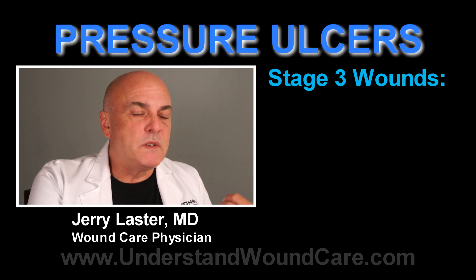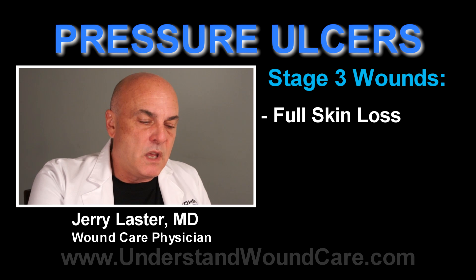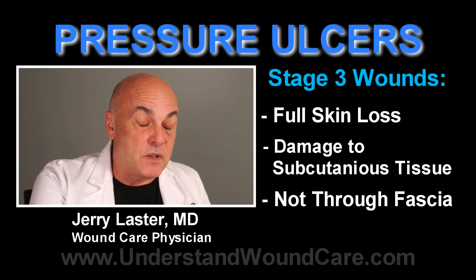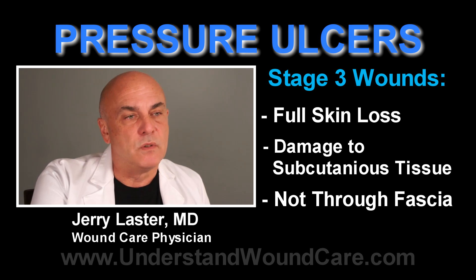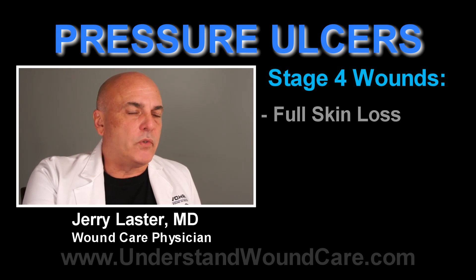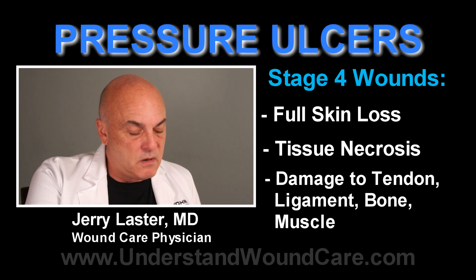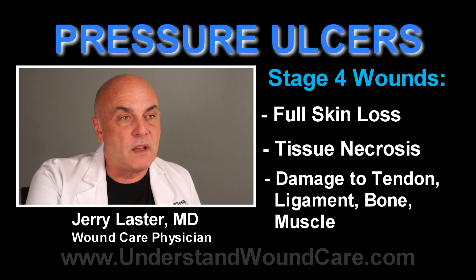A Stage 3 wound means the entire skin — dermis and epidermis — has been disrupted into the fat, but you're not disrupting the muscle fascia, so you're really dealing with just deep subcutaneous tissue. A Stage 4 pressure ulcer is one in which you are looking at either tendon, ligaments, bone, or any structure below muscle — anything below the subcutaneous fat layer is considered a Stage 4 wound.